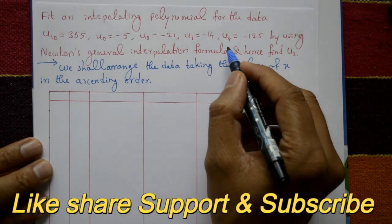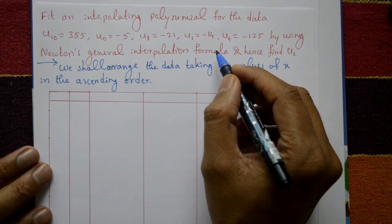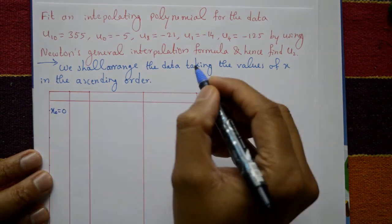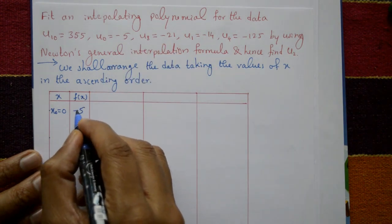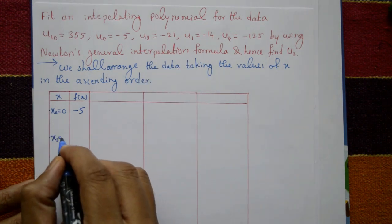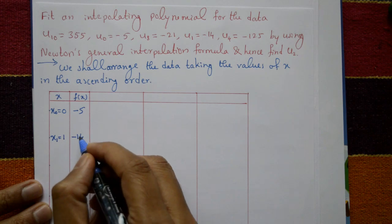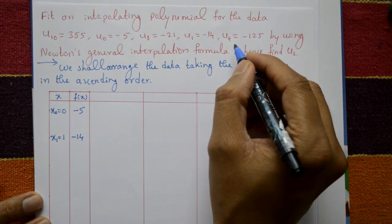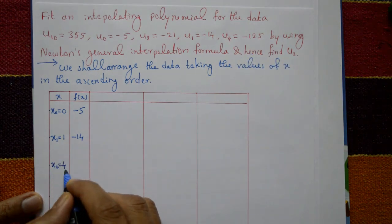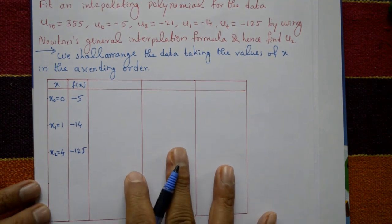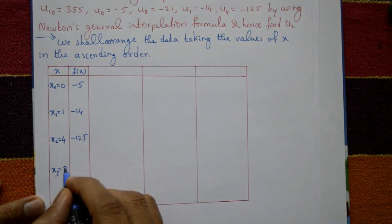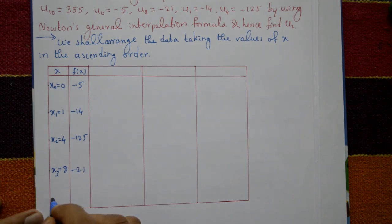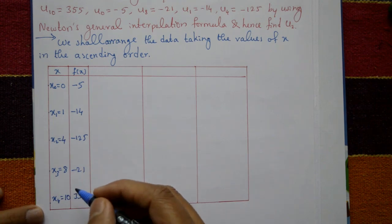First, we shall arrange the data taking the values of X in ascending order for convenience. So: X0 = 0, F(X0) = -5; X1 = 1, F(X1) = -14; X2 = 4, F(X2) = -125; X3 = 8, F(X3) = -21; X4 = 10, F(X4) = 355.